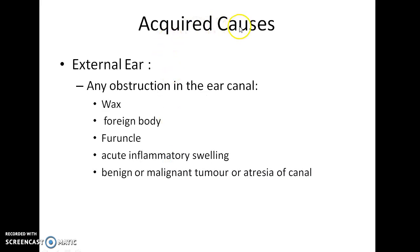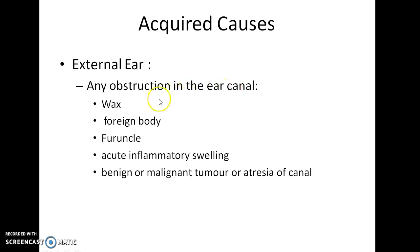The acquired causes of conductive hearing loss can be divided into two types: causes in the external ear and causes in the middle ear. Acquired causes due to a problem in the external ear include any obstruction in the ear canal like wax, foreign body, furuncle, acute inflammatory swelling, benign or malignant tumor, or atresia of the canal.